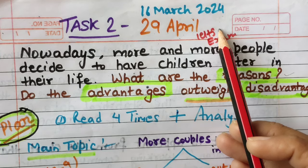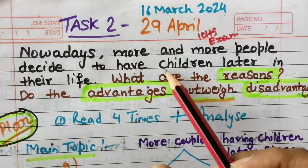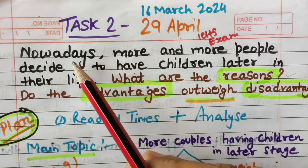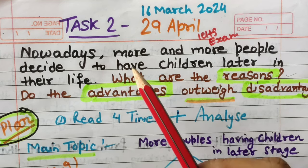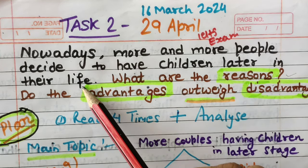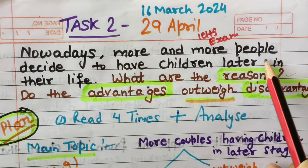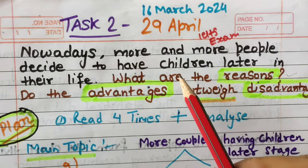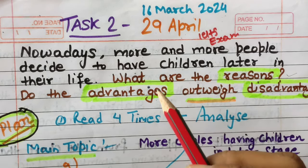Now let's read the question statement. You can see two dates: 16th March 2024 and 29th April 2023 — the same question repeated after almost one year. The question statement is: 'Nowadays more and more people decide to have children later in their life.' The main topic here is that people — married couples — are deciding to have children later, meaning at an older age.